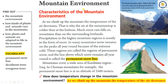Mountain environment. Characteristics of the mountain environment. As we climb up the mountain, the temperature of the air decreases. That is why the air at the mountaintop is colder than at the bottom. Much more rain falls on mountains than on the surrounding lowlands. Precipitation in the higher mountain regions is mostly in the form of snow. In many mountains, snow remains on the peaks all year round because of the extreme cold. These regions are called the regions of permanent snow, and the line above which snow remains all year round is called the permanent snow line. Mountains cover a wide area of Kurdistan region Iraq. In Choman mountains, for example, the permanent snow line is at an altitude of 3,500 meters.